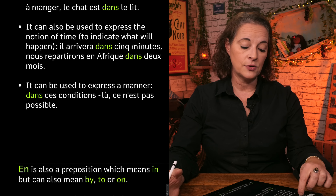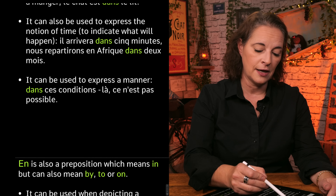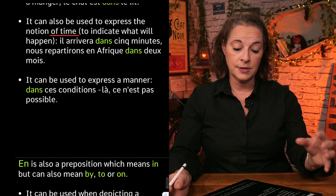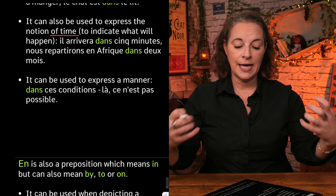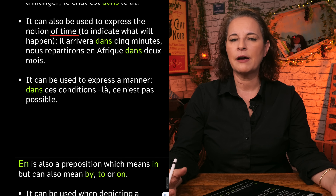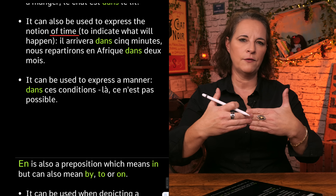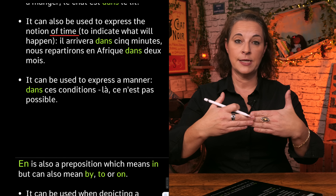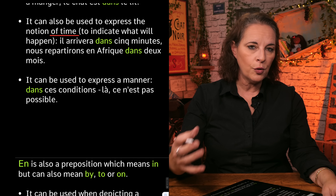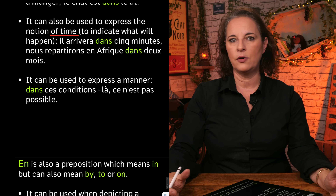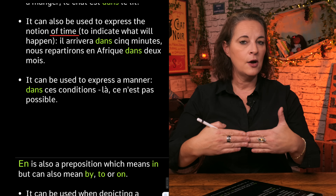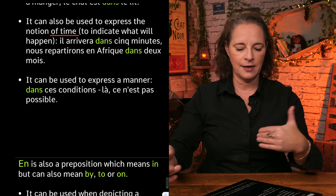Dans can also be used to express the notion of time — I'm going to underline time for you — because it can indicate what will happen. For example, il arrivera dans cinq minutes — he will arrive in five minutes. So it's a notion of what's going to happen. Dans cinq minutes, je vais manger — in five minutes, I'm going to eat. Ou nous repartirons en Afrique dans deux mois — we'll go back to Africa in two months. So the notion of time here is what's going to happen in what period of time.